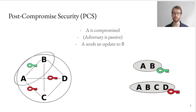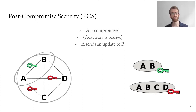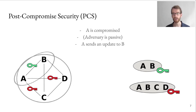In both paradigms, this heals the group between A and B. You can see the key on the one-to-one channel between A and B has turned green because of the update. Similarly, in the second paradigm, the group key of the group consisting of A and B has also turned green. In our work, we look at post-compromised security both in terms of authentication and confidentiality. In the following example we are going to look at confidentiality, and after that Britta is going to talk about authentication.